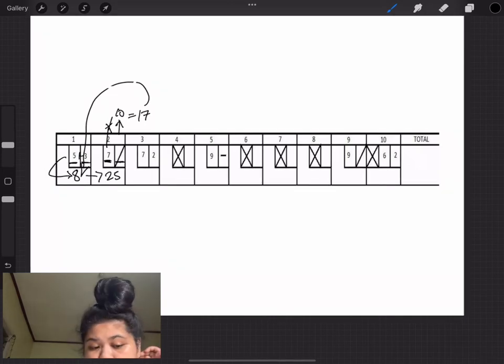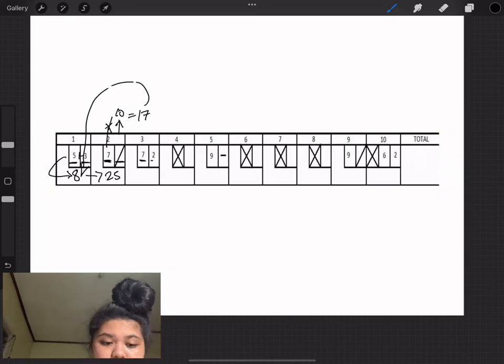Now on to the third frame, we get 7 plus 2 equals 9, plus the previous score 25, and that gives us 34.